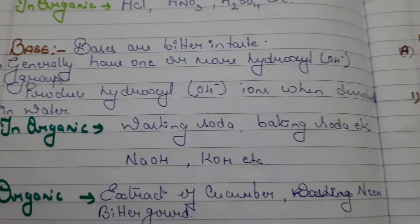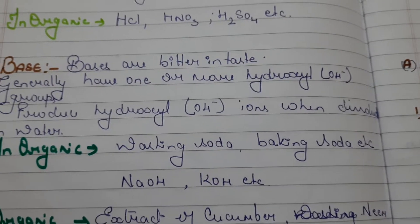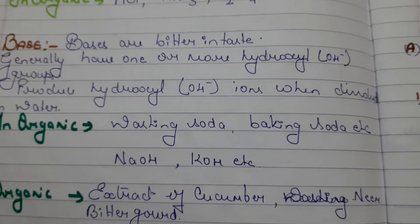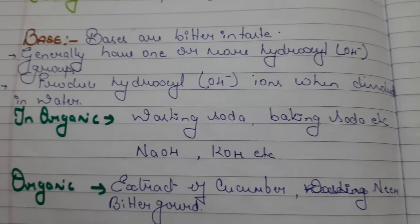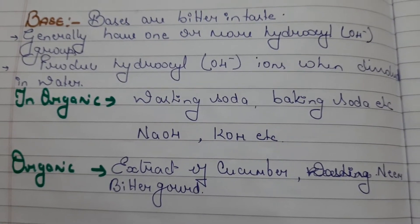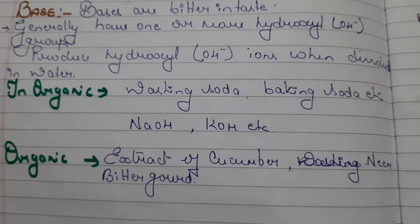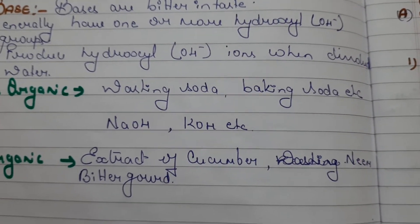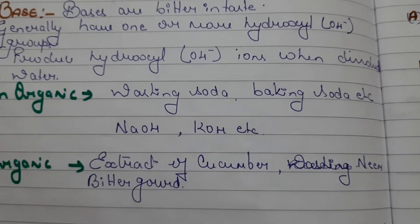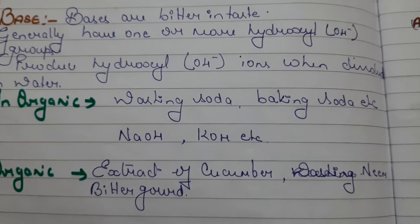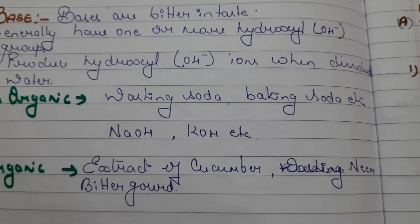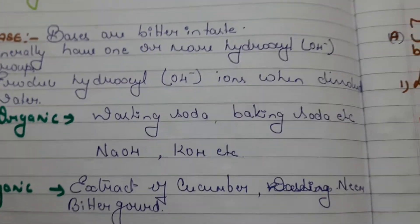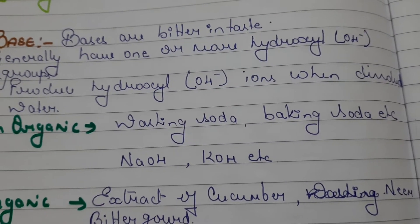Examples of inorganic bases include washing soda, baking soda, sodium hydroxide, and potassium hydroxide. Organic bases can be prepared by extracting things like cucumber, neem, or bitter gourd and then tasting them to determine whether they are a base or an acid.